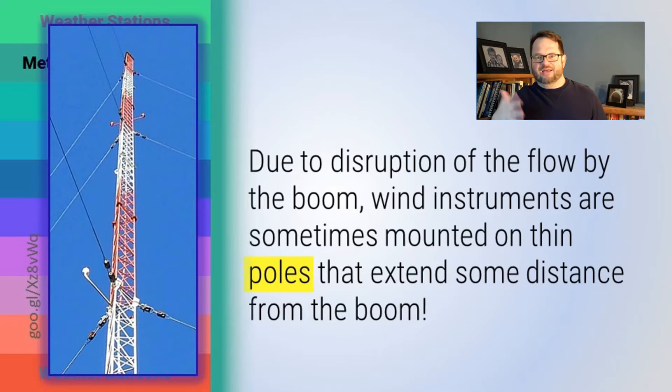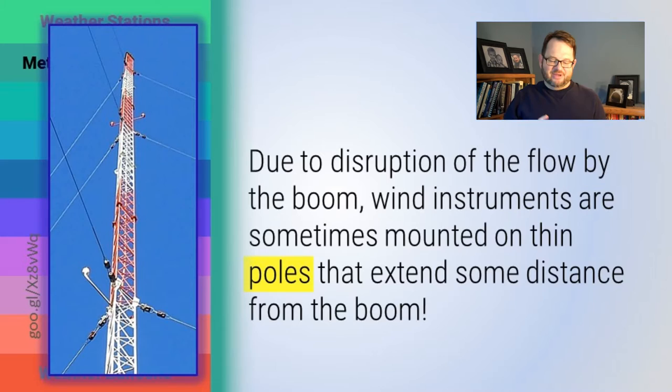You can see this becomes kind of recursive — now you have to worry about how the pole itself is disrupting the flow. But at some point we have to say that's far enough, that's good enough. And that's the way we design a meteorological mast.